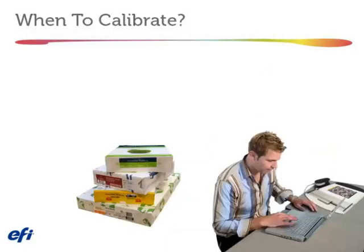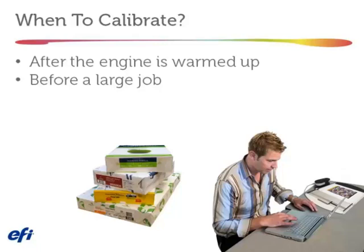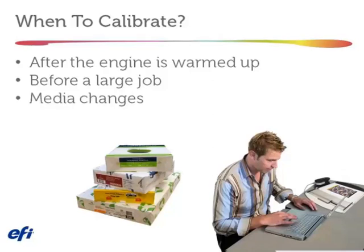How often should you calibrate? First, calibrate after the engine is warmed up — not on the first sheet in the morning. Wait 10 or 20 sheets. Second, calibrate before a large job. If you can batch jobs together — say three jobs on one paper and the rest on another — calibrate for the first paper, run those jobs, then calibrate for the second paper and run the rest. Also calibrate whenever there are media changes.